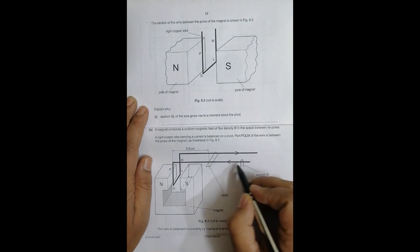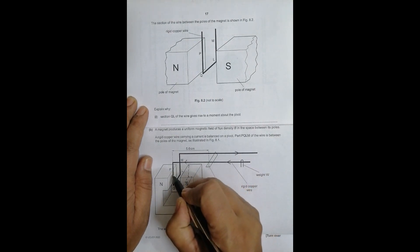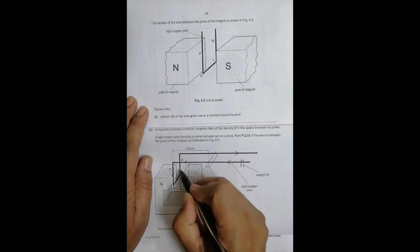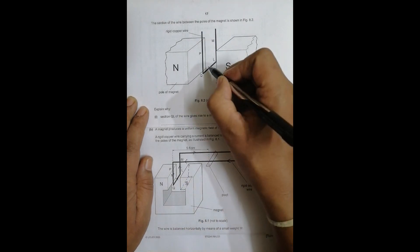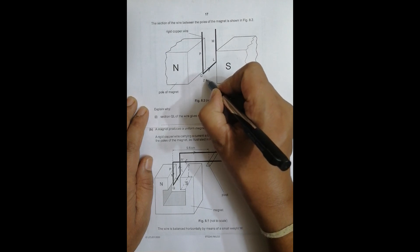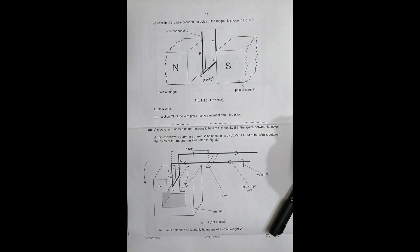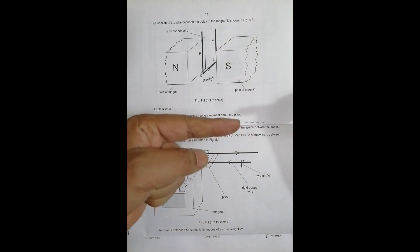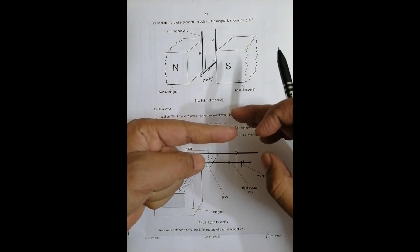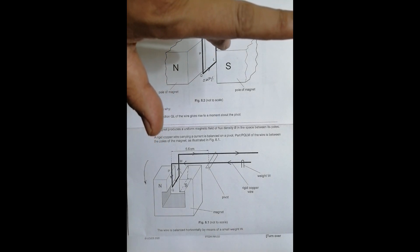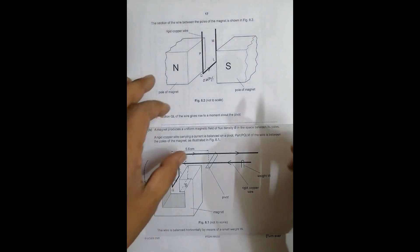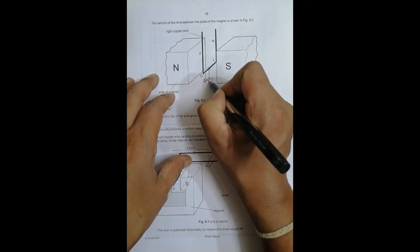Since the current flows through the wire, in section QL the current is going away from us. Applying the left-hand rule: we have the north and south poles giving the direction of the magnetic field, and with the current going away, the force on QL acts in a specific direction — this QL portion experiences a force in that direction.